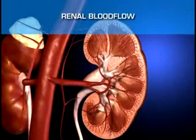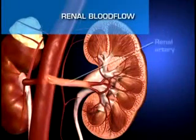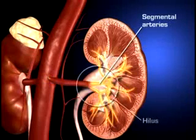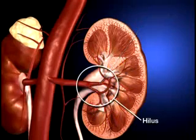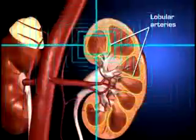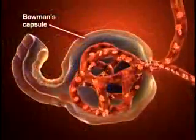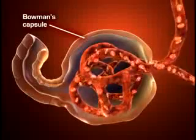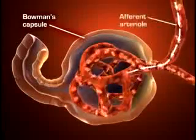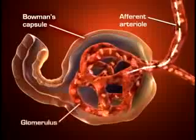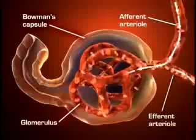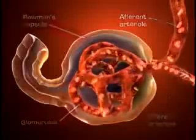Each kidney is supplied with blood by a single renal artery that arises on its respective side of the aorta before dividing into five segmental arteries that enter the hilus. Within the kidney, each segmental artery branches into several lobular arteries, which further subdivide to form interlobular arteries that branch off into afferent arterioles. Blood flows into the glomeruli through the afferent arterioles and out of the glomerulus through the efferent arteriole. The afferent and efferent arterioles regulate glomerular capillary pressure by selectively dilating or constricting.